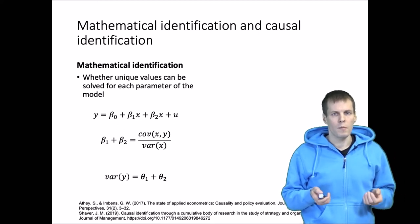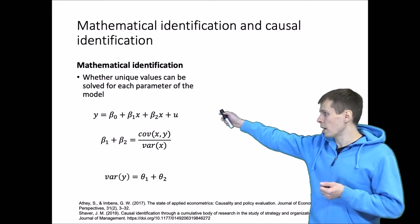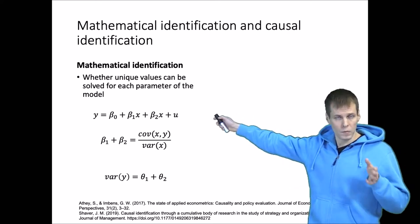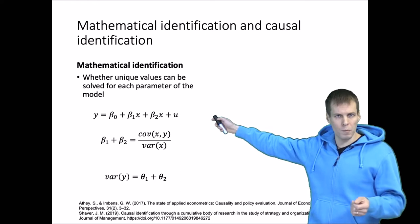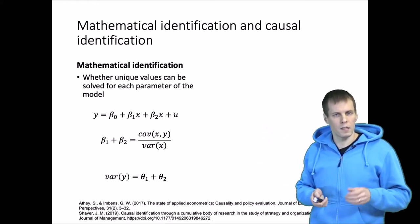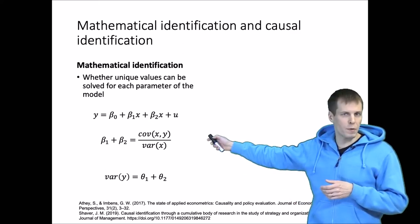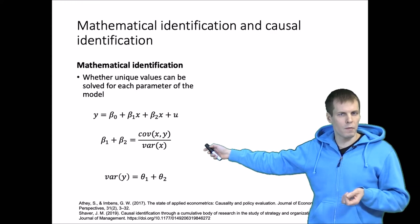Here are two examples of non-identified models. Let's say that y equals beta 0 plus beta 1 x1 plus beta 2 x1 plus u. We can calculate that the sum of beta 1 and beta 2 must equal the covariance between x and y divided by the variance of x.